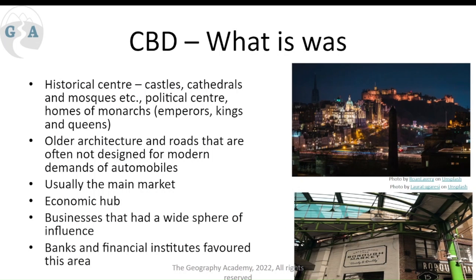The CBD was the historical center — castles, cathedrals, mosques, political centers are all based there, and it expanded outward. We often find older architecture and very small roads in older cities because they weren't built for high volumes of traffic. The marketplace was the economic hub: banks and financial institutes could afford the higher rental costs, and you would have seen the aristocracy living close to this CBD.